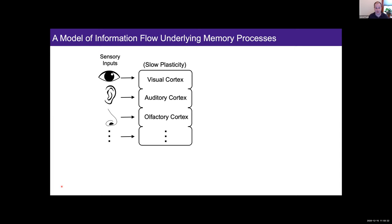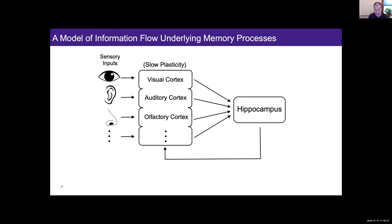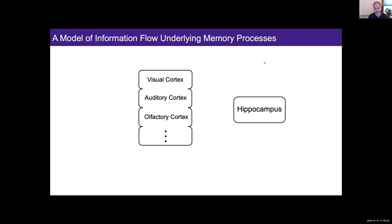That slowness is useful for maintaining processing stability and having things look perceptually similar each time you see them, but it's problematic if you want to store memories for events that occur only once. As Maxime mentioned, the thought is that there's a loop through the hippocampus, which is a site of very rapid plasticity. During an experience, encoding plasticity likely occurs at the inputs, within the hippocampus, and between the hippocampus and the cortex, causing very fast synaptic changes.